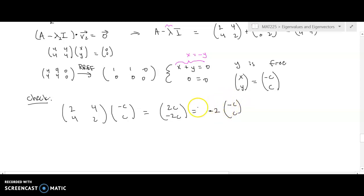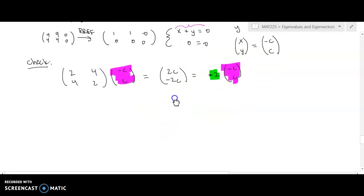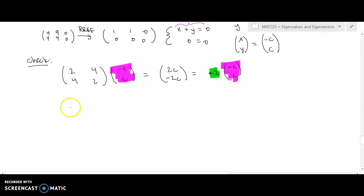So I see that that is, in fact, an eigenvector. Once again, I input [-c, c]. I got out a scalar multiple of that vector. So any choice of c is fine, again, other than 0. So let c equal 1 be my choice. And therefore, v2 is going to be the vector [-1, 1].